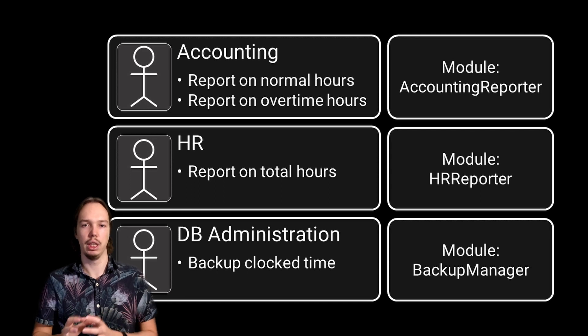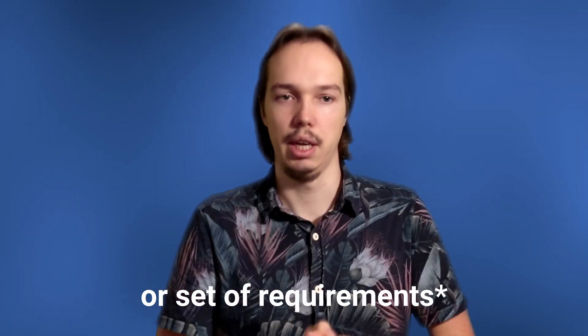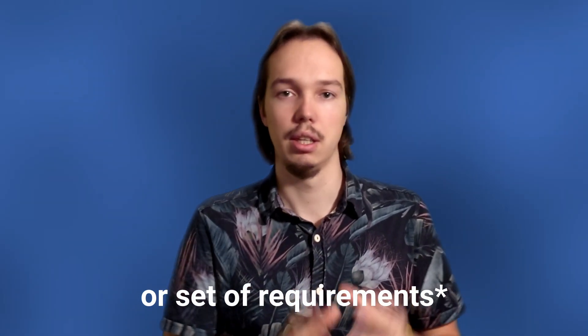To summarize: a module is a cohesive set of functions and data structures that belong together. To determine what things belong together, we need to consider what actors they are responsible for. If there are two different actors, it makes sense to split things into different modules. If all the functions and data structures fulfill a requirement for only one actor — and thus have only one reason to change — then it makes sense to group them together in one module. By following the single responsibility principle, we can decide how to divide our code into modules and verify whether our current division is actually a good one.